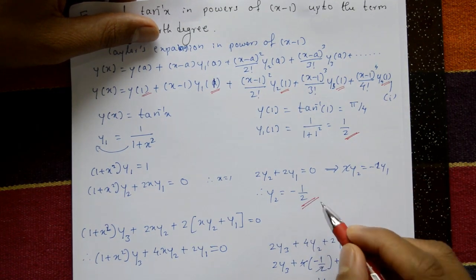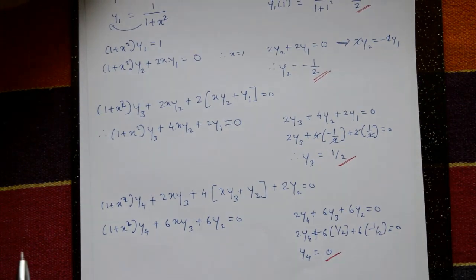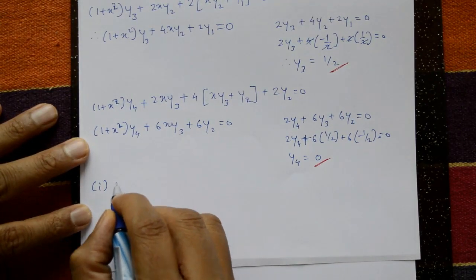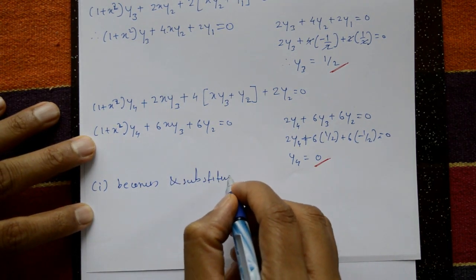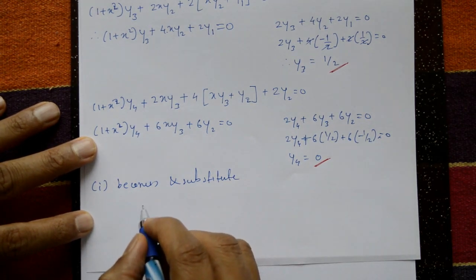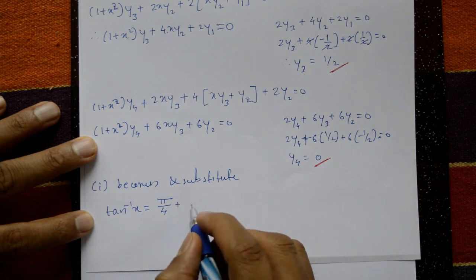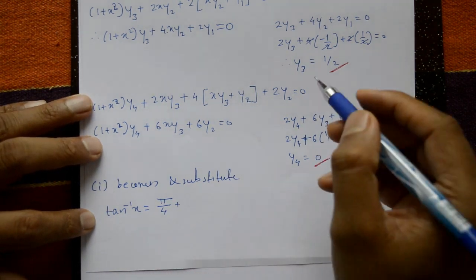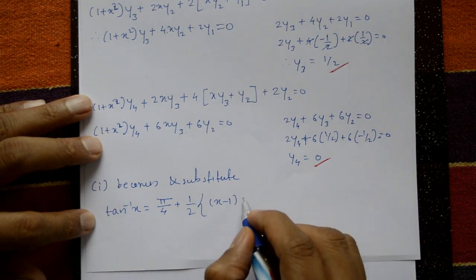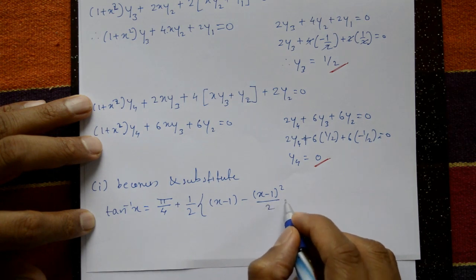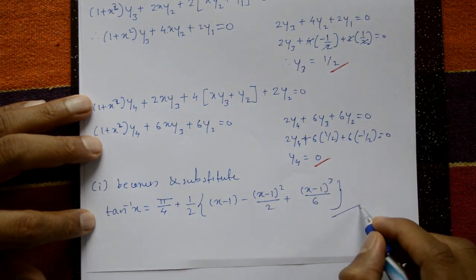Substituting all values into equation number one: tan⁻¹(x) = π/4 + (1/2)[(x−1) − (x−1)²/2 + (x−1)³/6] since y₄ = 0 and y₁ = y₂ = y₃ = 1/2 (common factor taken out). This is the required answer.